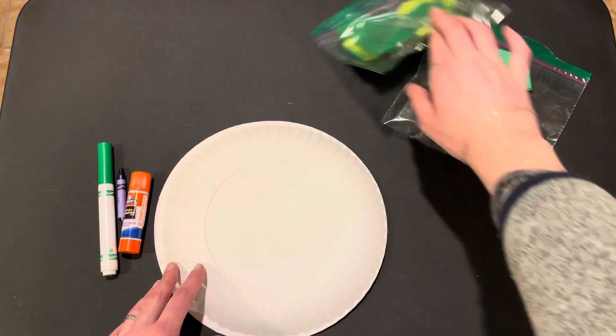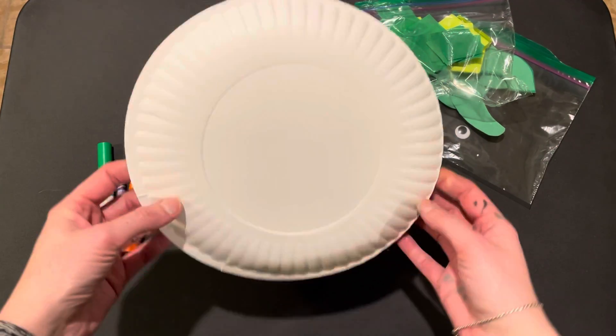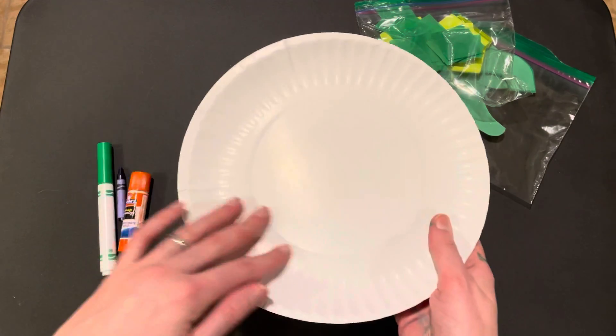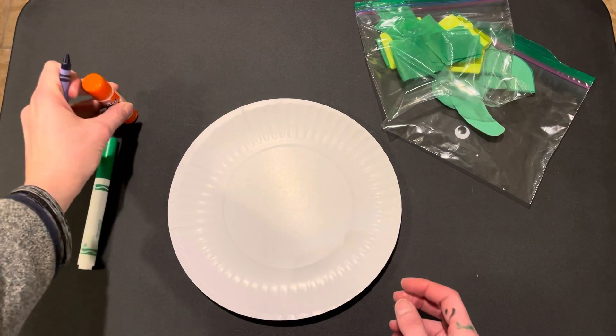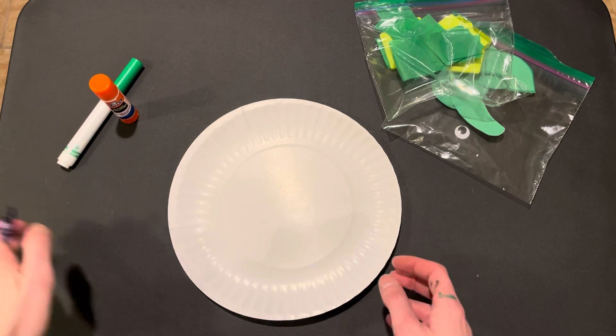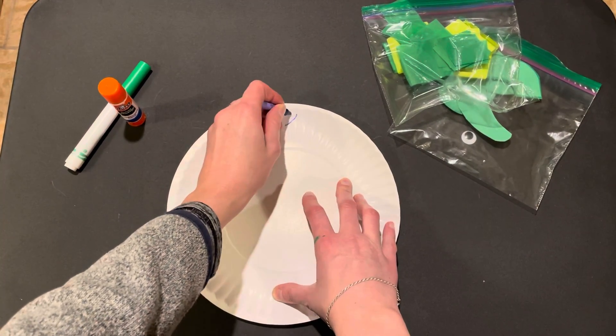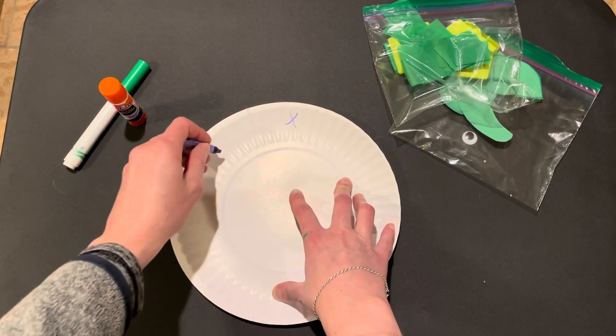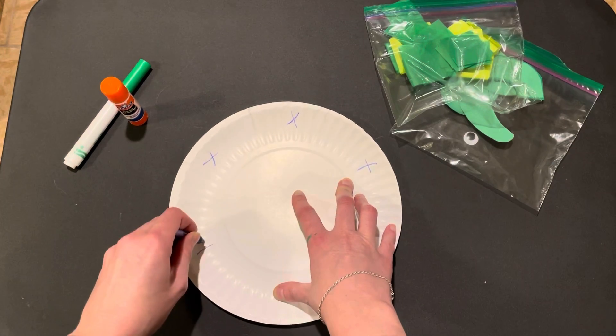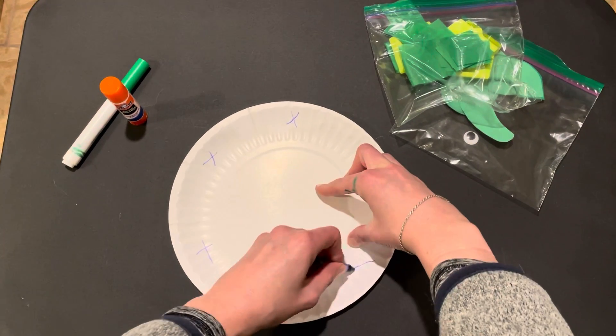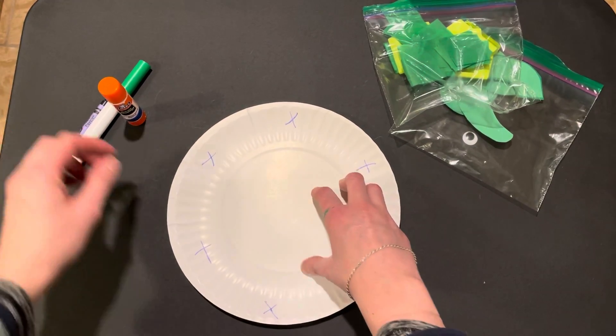So for our turtle craft this will be the outside of the turtle shell and this will be the inside and we're actually gonna start here. As the helper I like to provide a little visual guide for my friends where to place the glue for the parts of the turtle. So I'm gonna mark where the head will go, where her arms will go, where her legs will go, and where her tail will go.